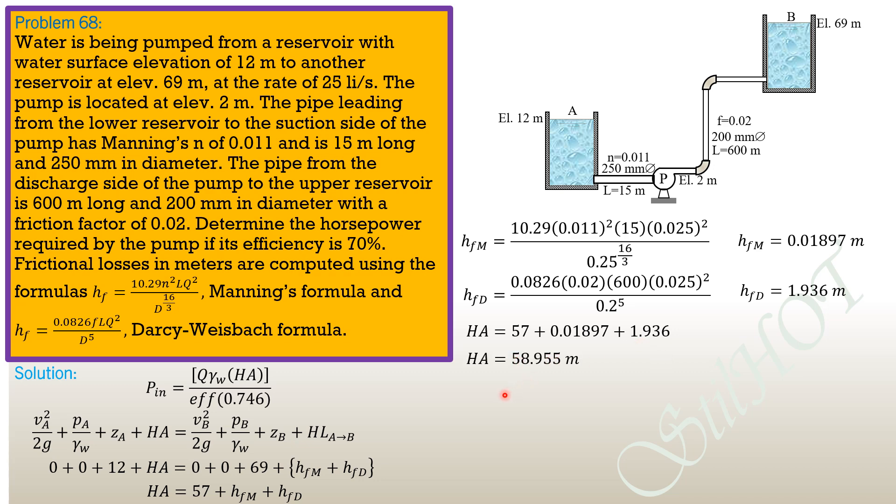Therefore, head added is 57 + 0.01897 + 1.936, so head added by the pump equals 58.955 meters. We then substitute into the power equation.